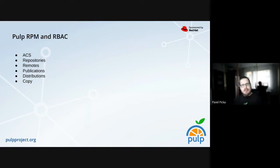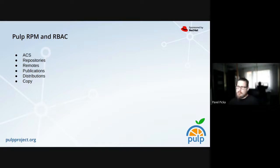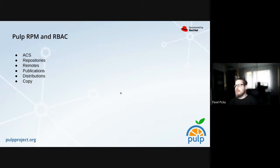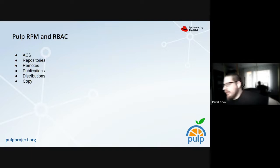Now a little mix with the RPM plugin. Here is a list of the API endpoints which are supported. You may notice you don't see all endpoints — I'll get to that. There is one endpoint, 'copy', which is not a content endpoint, so you can even manage roles or permissions for custom actions or any custom stuff that can appear.